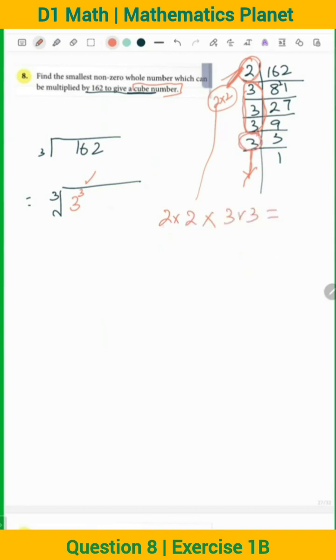What will you get? 2 times 2 is 4, 3 times 3 is 9, so 9 times 4 equals 36. This means the smallest whole number that can be multiplied with 162 to give a cube number will be 36.